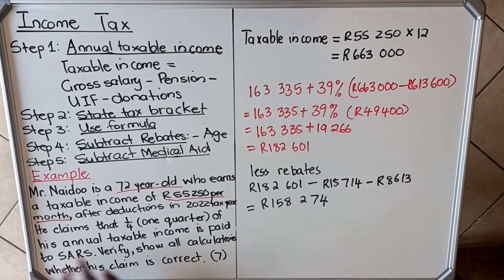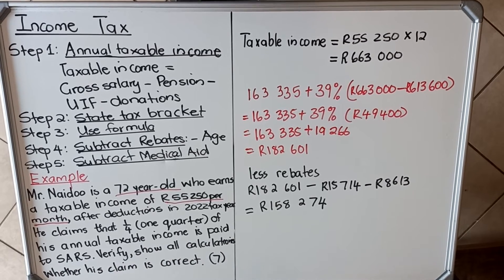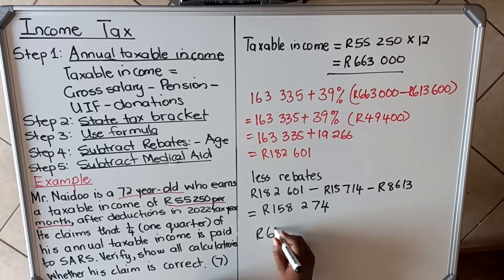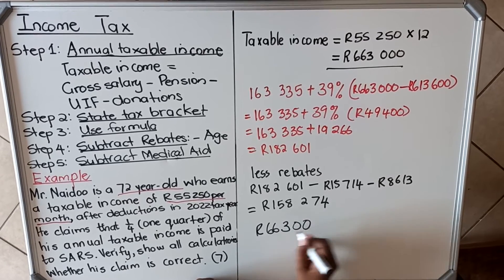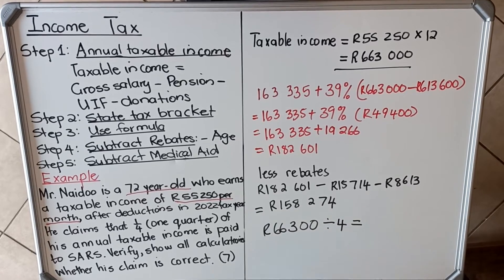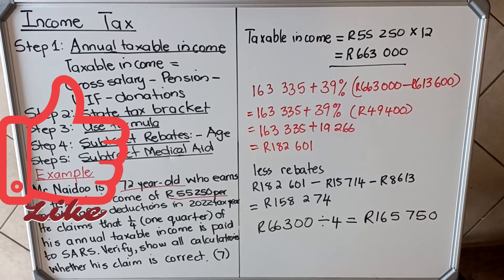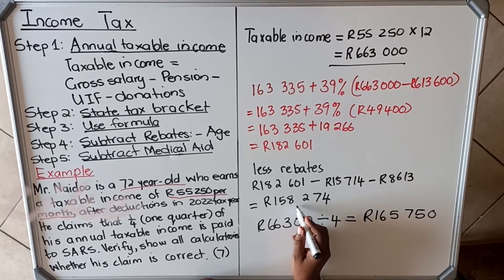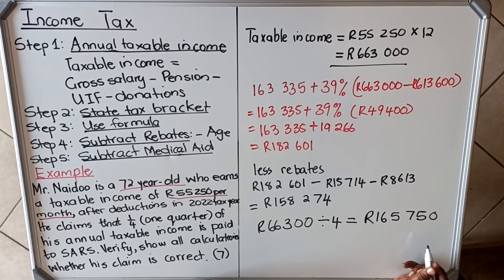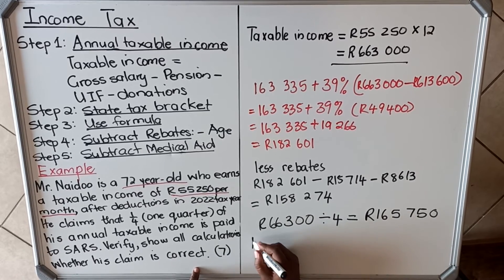Now let's answer the question. He claimed that a quarter of his annual taxable income is paid to SARS. A quarter of R663,000 is 663,000 ÷ 4 = R165,750. His claim is not correct — he is actually paying R158,274, which is less than the R165,750 he claimed. Therefore his claim is incorrect.